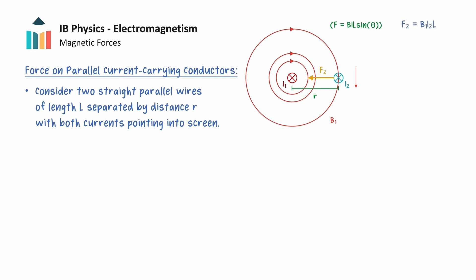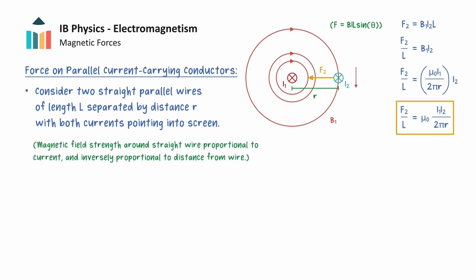The magnitude is given by the following expression, where B1 is the magnetic field strength of wire 1 at the position of wire 2, and I2 and L are the current and length of wire 2. If we now divide both sides by the length L, we can obtain an expression for the force per unit length on wire 2. This can be expanded further to the following equation from the data booklet, which makes use of the fact that the magnetic field strength around a straight current-carrying wire is proportional to the current in the wire and inversely proportional to the perpendicular distance from the wire.